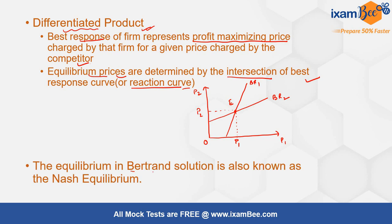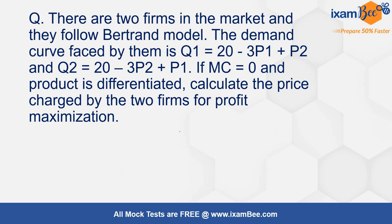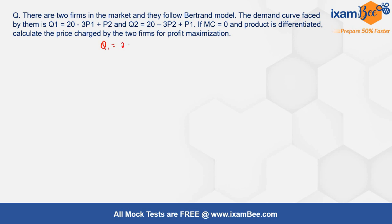The equilibrium in the Bertrand solution is also known as the Nash equilibrium of the game, because firms do not have any incentive to deviate. Now let's look at a numerical. There are two firms following the Bertrand model, determining prices simultaneously. The demand curves are Q1 = 20 − 3P1 + P2 and Q2 = 20 − 3P2 + P1. The marginal cost is 0 and the product is differentiated. We need to calculate the prices for profit maximization.